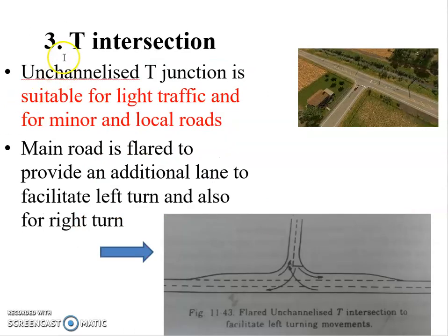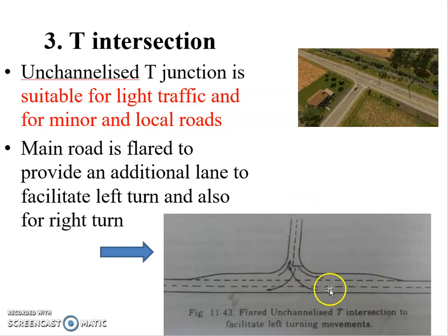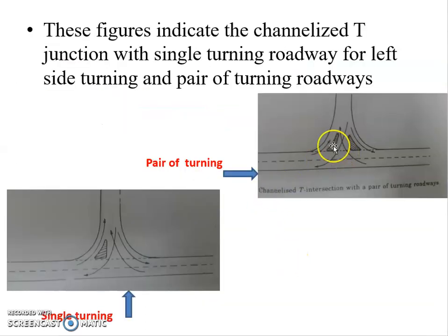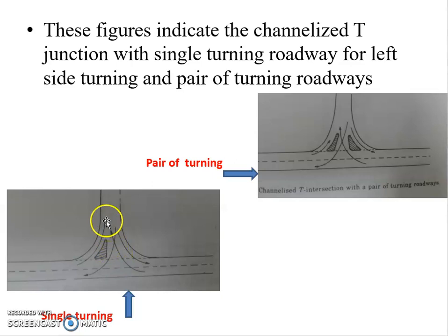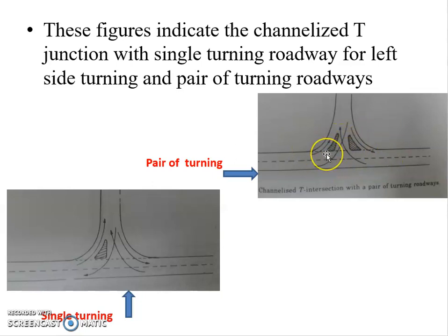The third standard at-grade intersection type is T-intersections. T-intersections are provided where roads meet in a T-shape. In this configuration, there is a potential for conflicts between vehicles coming from different approaches, and vehicles may conflict with other vehicles at the junction point.